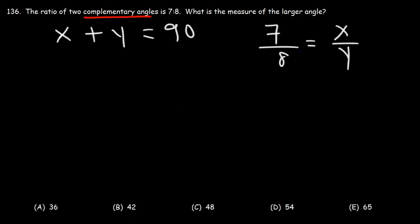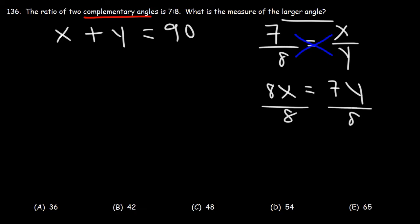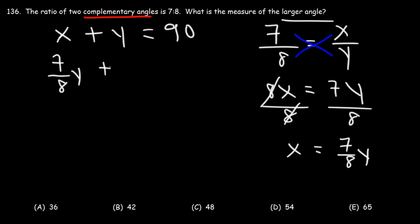Cross-multiplying gives 8x equals 7y. Solving for x by dividing both sides by 8: x equals 7/8 times y. Substituting back into x plus y equals 90, we get 7/8 times y plus y equals 90.